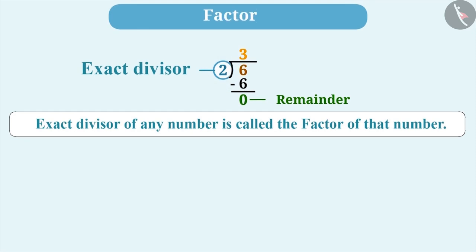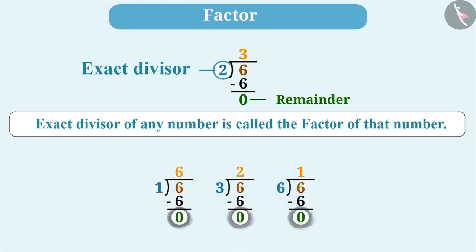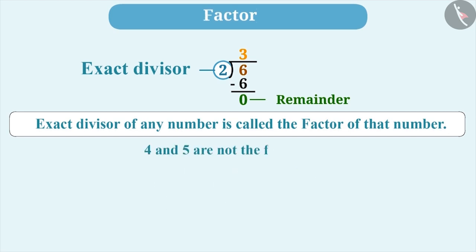Moreover, dividing 6 by either 1, 3, or 6 also results in remainder 0, which means along with 2, 1, 3, and 6 are also the factors of 6. 4 and 5 are not factors of 6. It's easy because 6 is not divisible by them, which means the remainder is not 0.